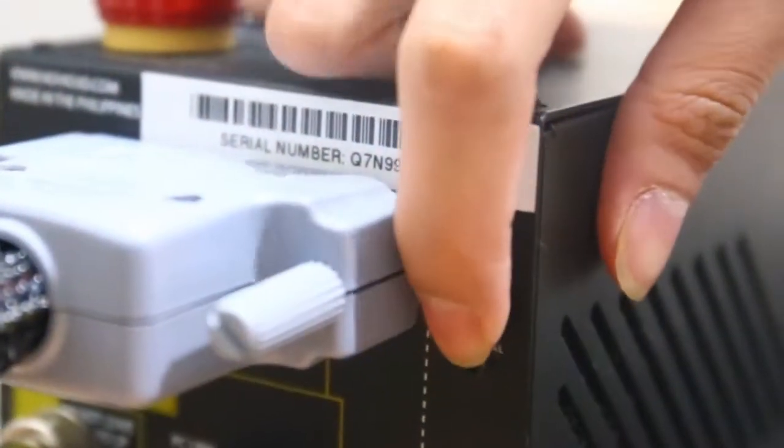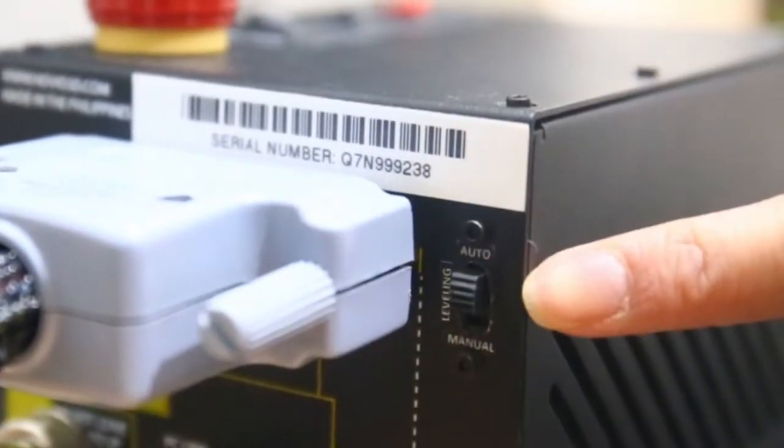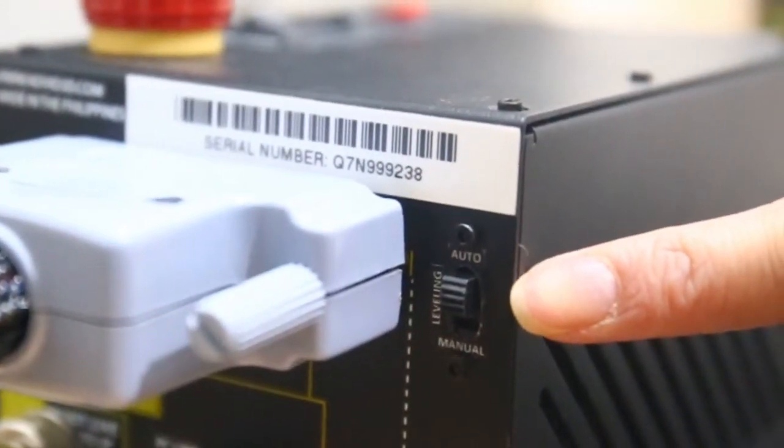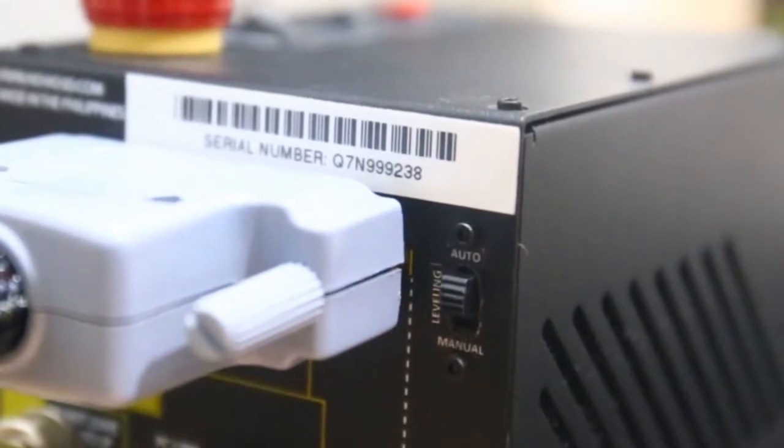Switch the auto-level button up located at the back of the PCB. The auto-leveling kit will not work if the switch is set on manual leveling.